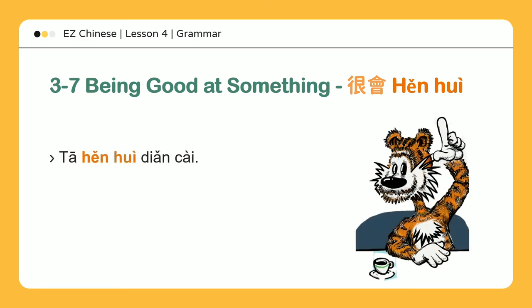他很会点菜 — He knows how to order food. 他很会吃，也很会点菜 — He appreciates fine cuisine, so he also knows how to order it.